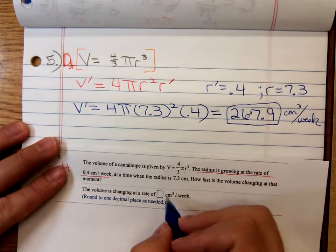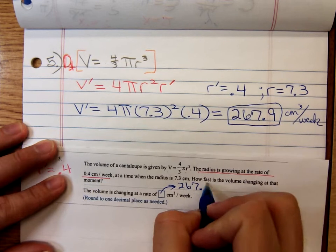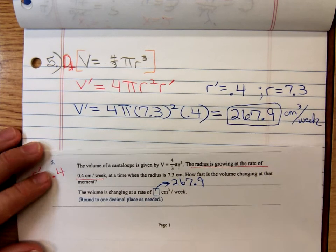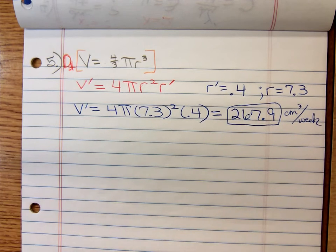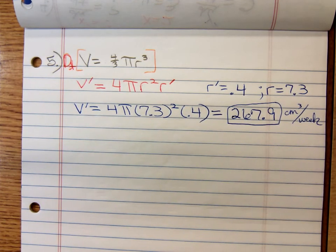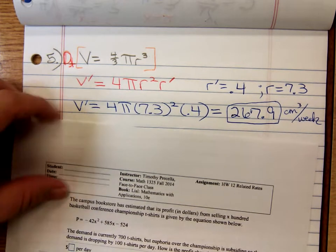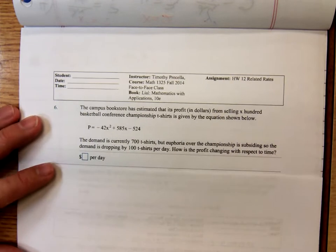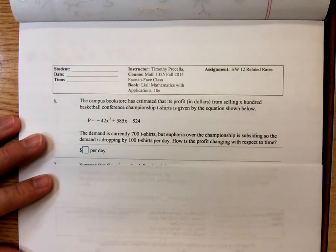So inside this little box here, we'd have a 267.9. And, oh wow, that was a pretty short one. Let's see if I can find a longer one. Hmm, let's see. Here's one. I bet you this one will be a little bit longer. This is number, we're looking at number six here now.